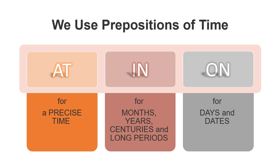We use 'at' for a precise time. We use 'in' for months, years, centuries, and long periods. We use 'on' for days and dates.